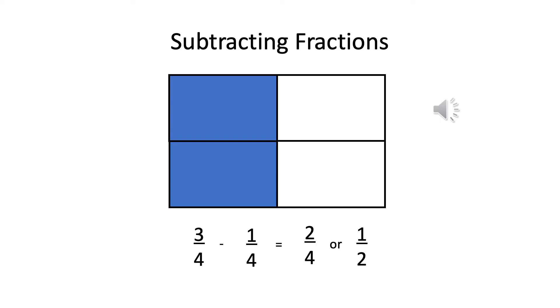In this example, we can see we've got a rectangle and it's divided into four equal parts. So it's divided into quarters, which is shown with the denominator, the bottom number, which is four. And then we can see we've got three quarters shaded in. We know that by looking at the numerator. And then we're going to subtract one quarter.